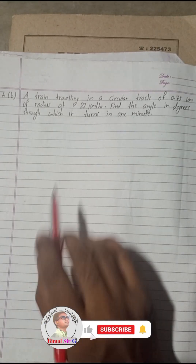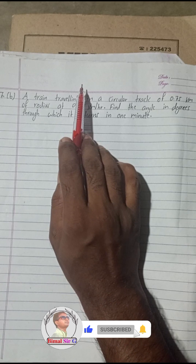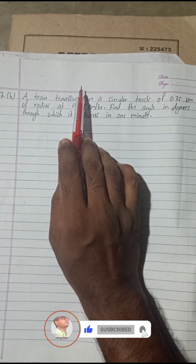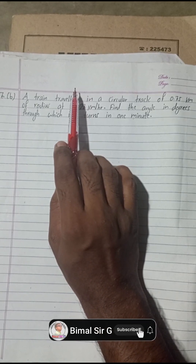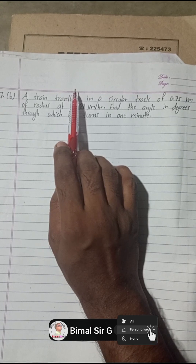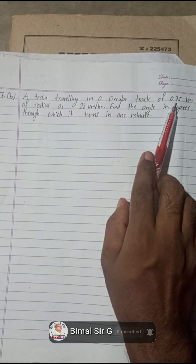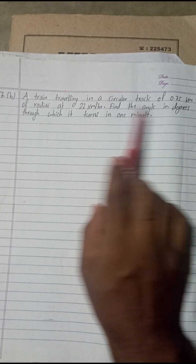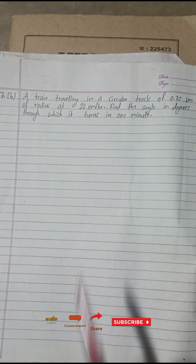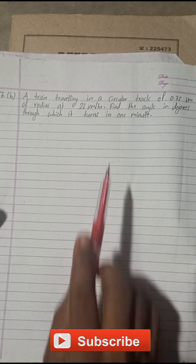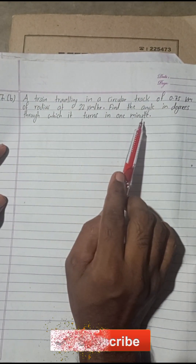Hi everybody, welcome back to Bimal Sarji's YouTube channel. This is from Class 9 Book Optional Mathematics, Exercise 8.3, Question Number 7B. A train traveling in a circular track of 0.75 kilometer radius at 22 kilometers per hour — find the angle in degrees through which it turns in one minute.